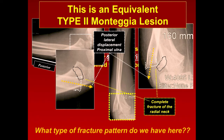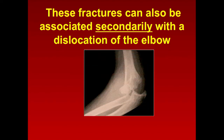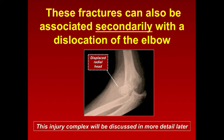It's very important that people don't just focus on the radial neck fracture — the most important component, as we'll discuss, is the angulation of the proximal ulna. Radial neck fractures can also occur secondarily with a dislocation of the elbow, where the radial head fractures as the elbow dislocates. We'll talk about this injury complex in more detail.